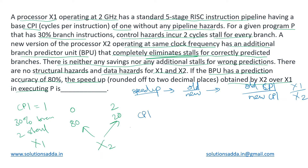Let us calculate the CPI for X1. For a normal processor it is 1 when there are no pipeline hazards. But program P has 30 percent branches, and for every branch we incur a penalty of two stall cycles. So the branch penalty is 0.30 × 2 = 0.60. Adding this gives CPI for X1 = 1 + 0.60 = 1.60.